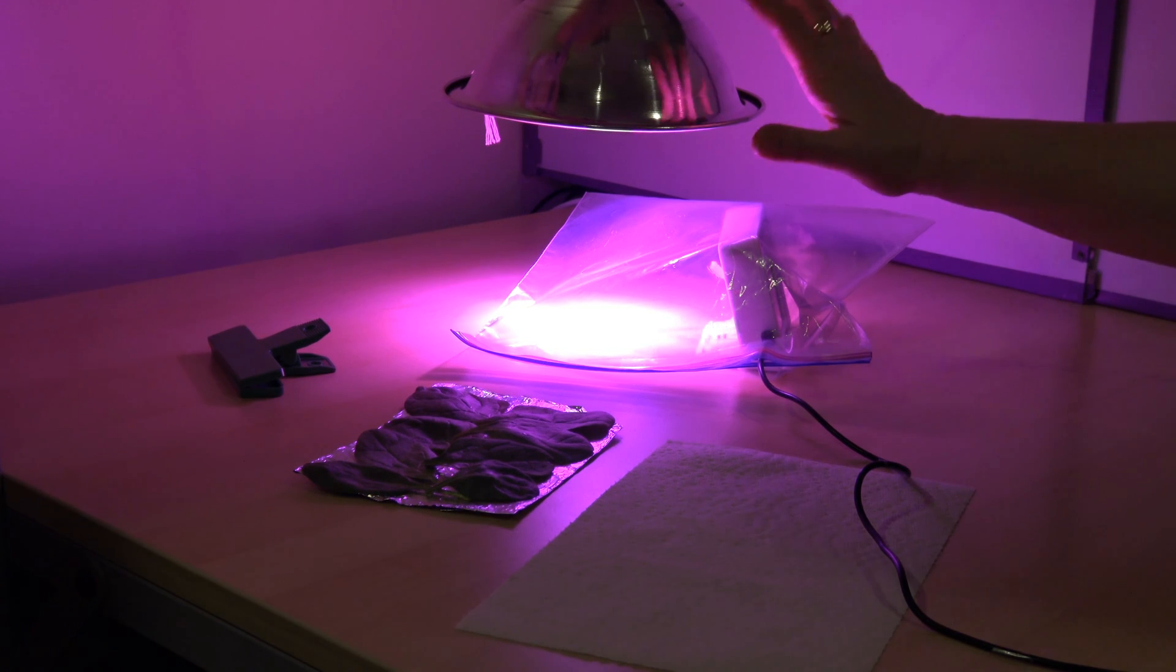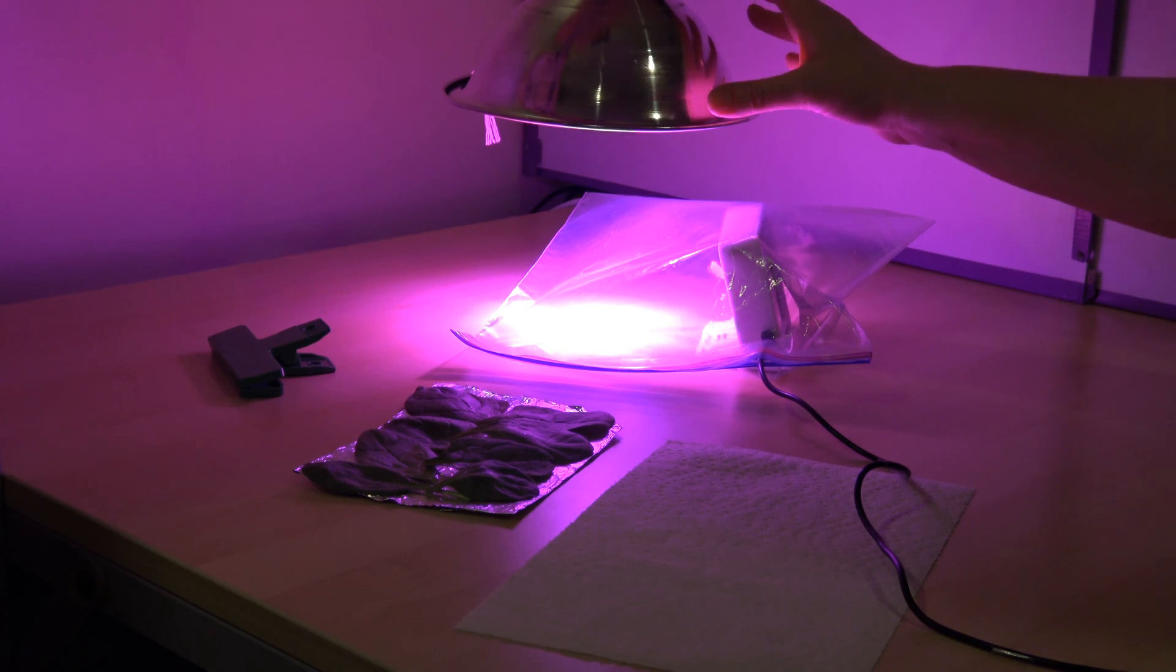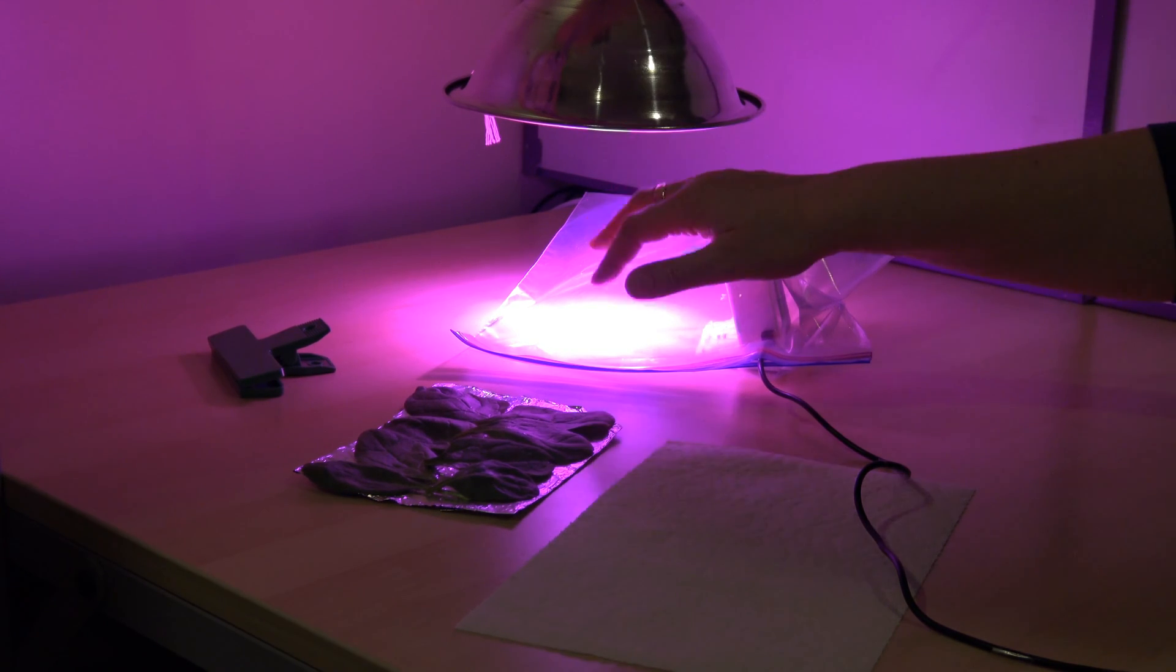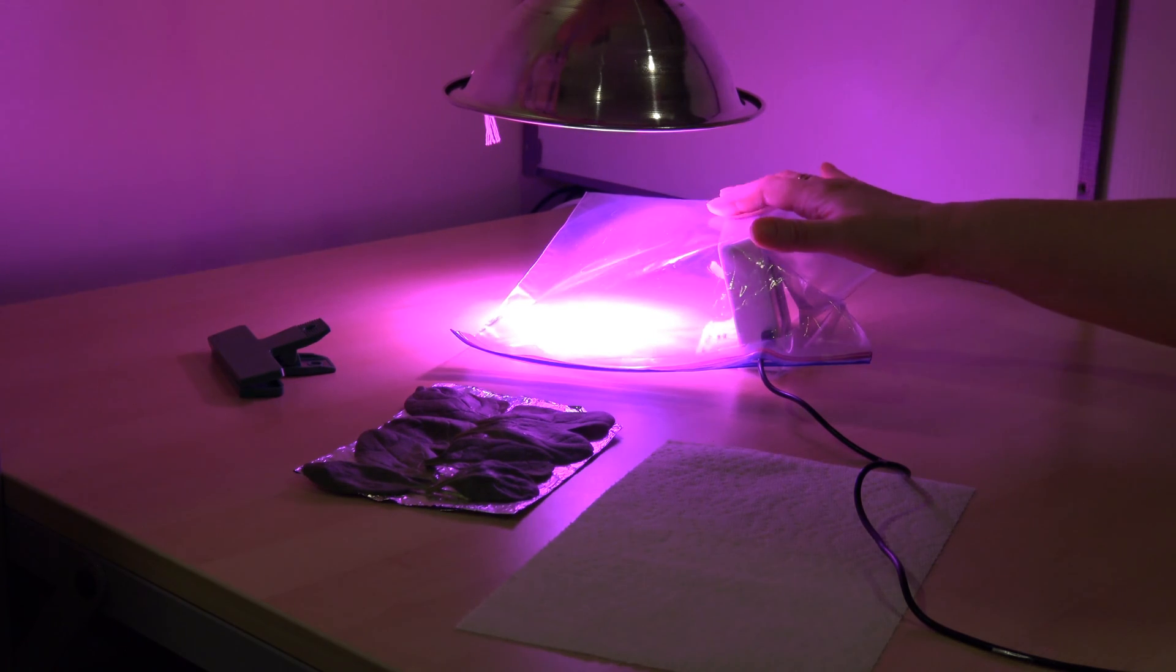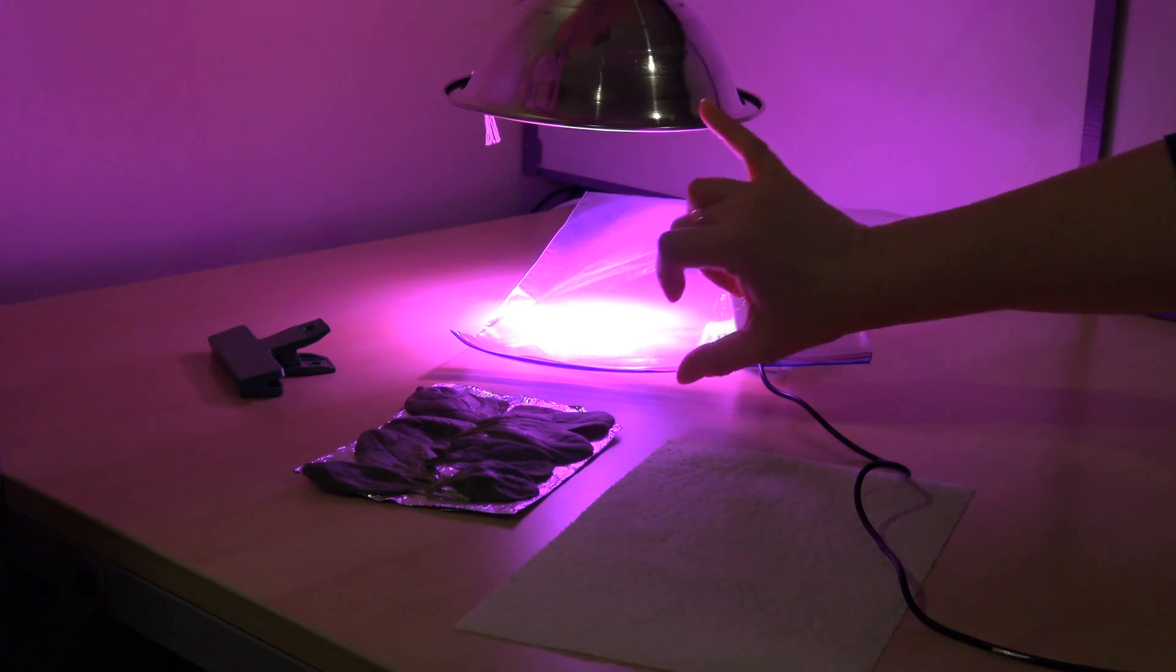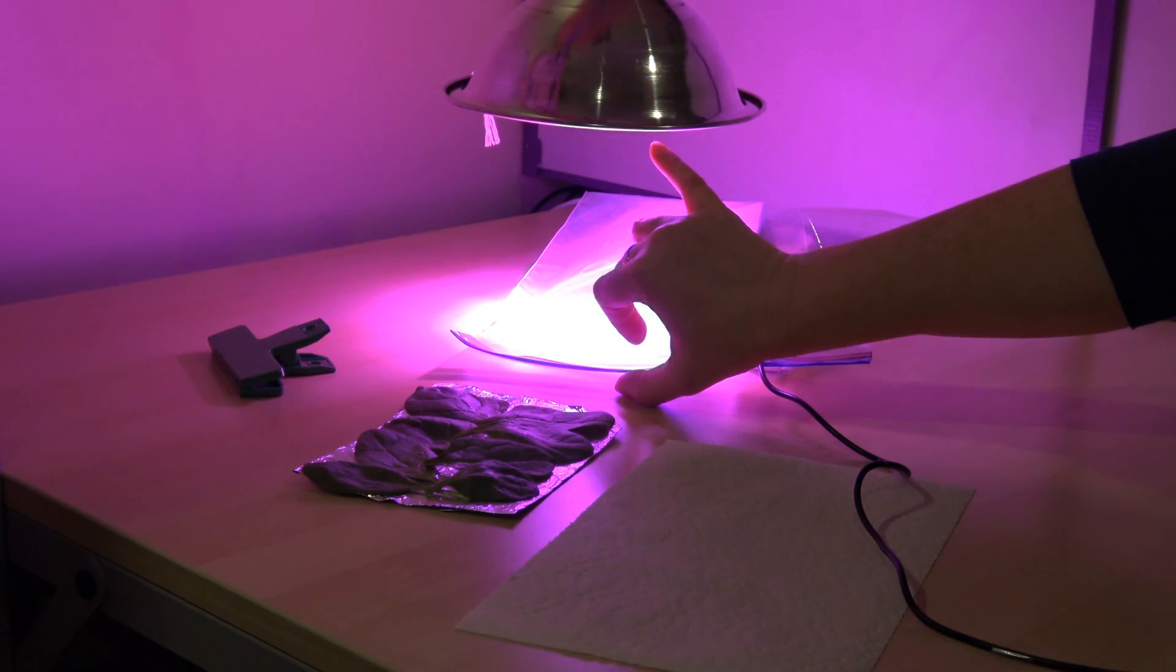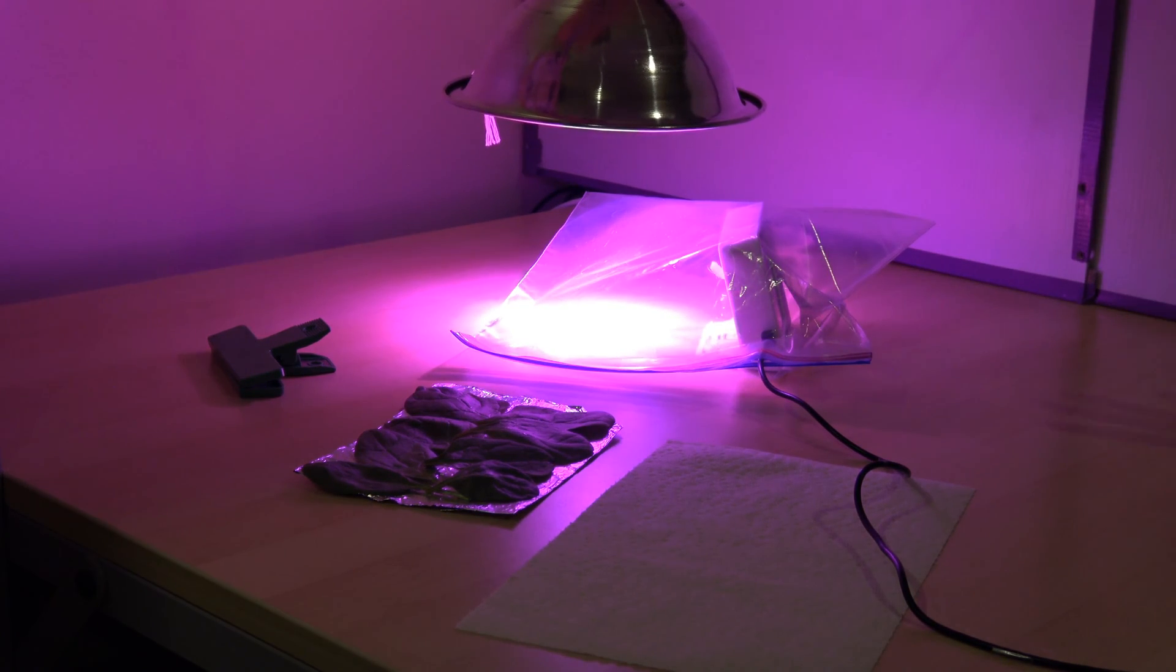Another thing I want to mention about the experimental setup is that in order to maximize photosynthesis we want as much light as possible directed on the leaves. So I've placed the bag and the detector right under our hydroponic grow lamp. Also the distance between the table surface and the face of the hydroponic grow light is about six inches.